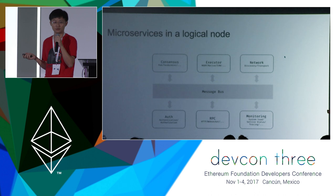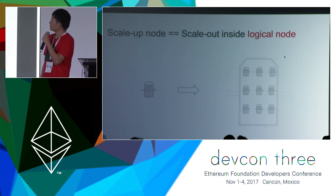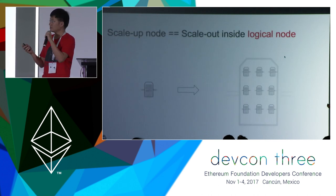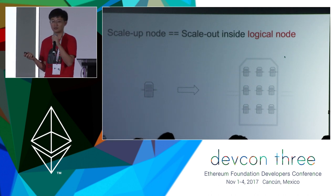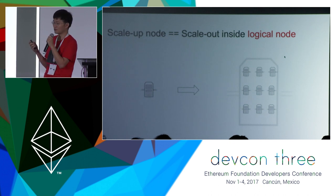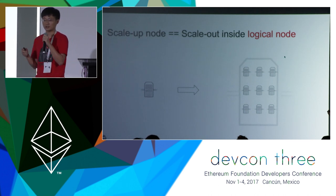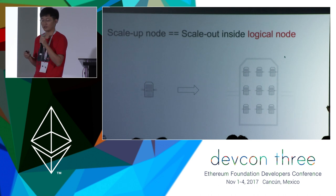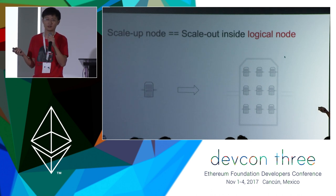Currently we use RabbitMQ as the message bus between microservices. So we turn the scale-up solution into a scale-out solution inside a logical node. In CIDA, a full node is not necessarily a single server — we call it a logical node because it may run on a server cluster.